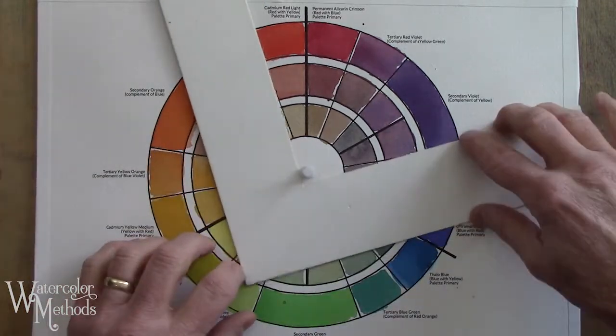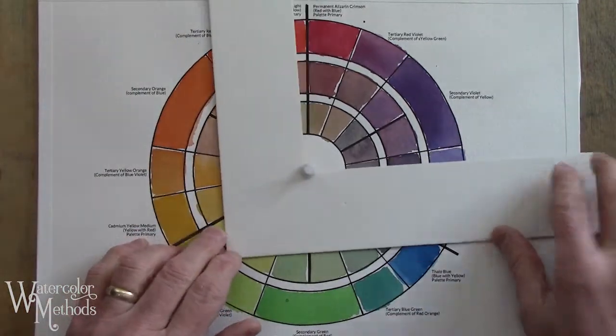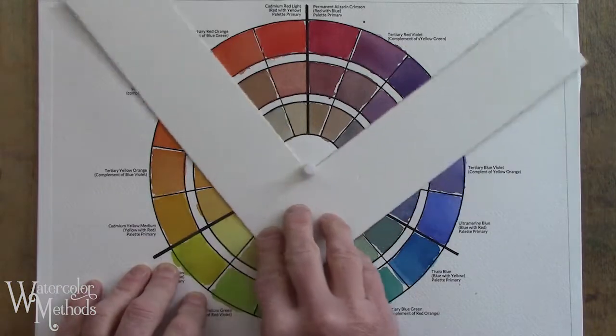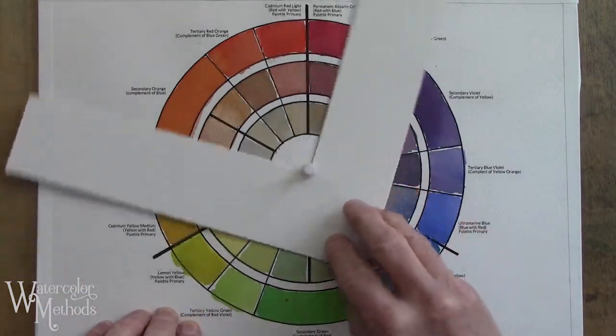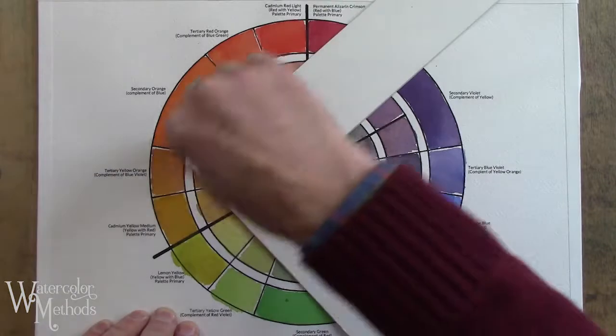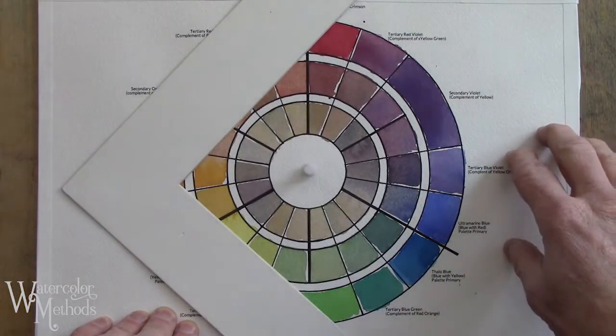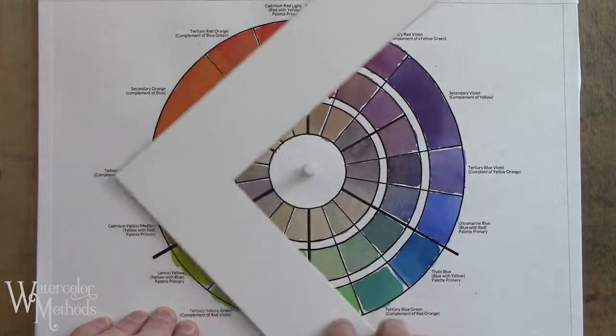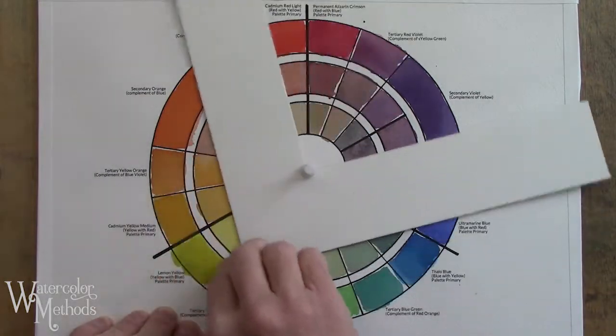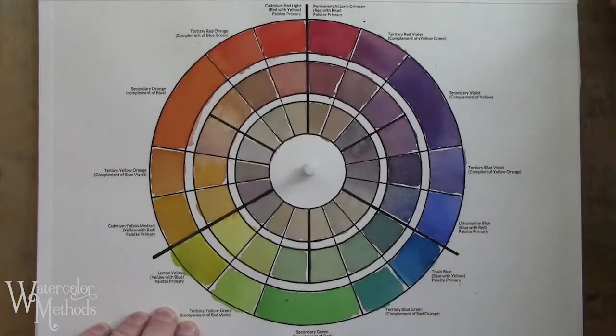Since it's a 90-degree angle, it's going to show you, or isolate, a quarter of that color wheel at any given time. It's quick and easy. I have my color wheel mounted to a piece of foam core board with a pushpin in the middle, which helps keep this centered.